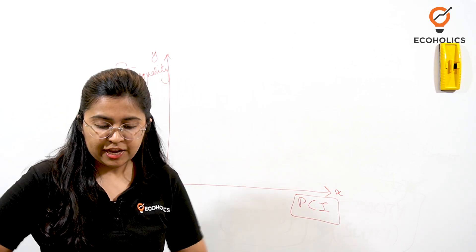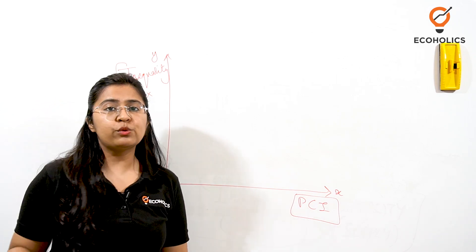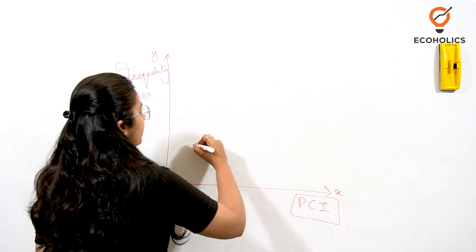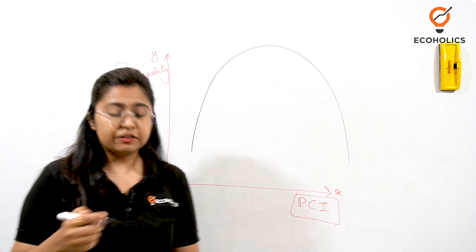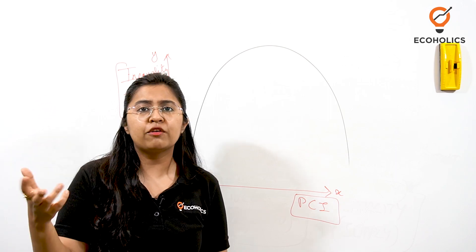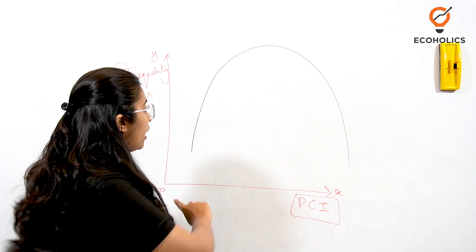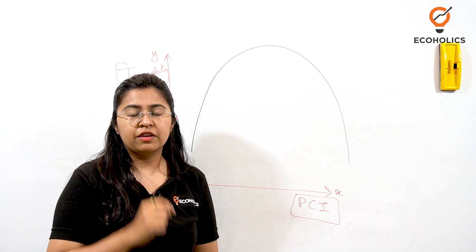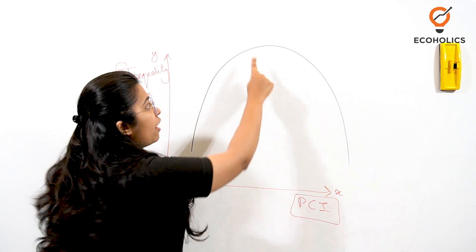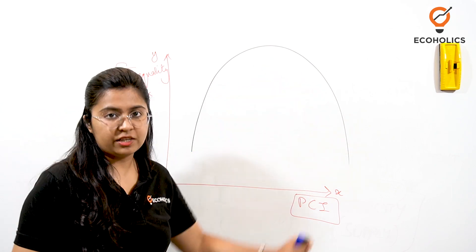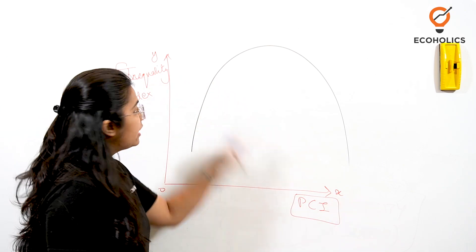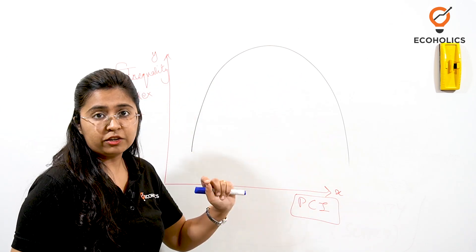Now let us start making the curve. The Kuznets curve is stated to be an inverted U-shaped curve. When an economy undergoes development, it goes through this inverted U-shaped curve. In the first phase the slope is increasing, and after reaching a saturation point it starts to decrease. Now let us find out what is the relation between these two factors with respect to the inverted U-shaped curve.